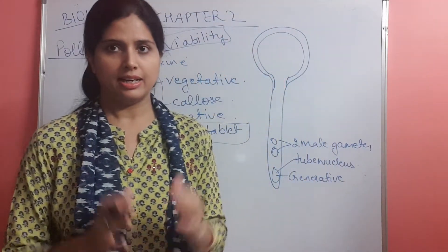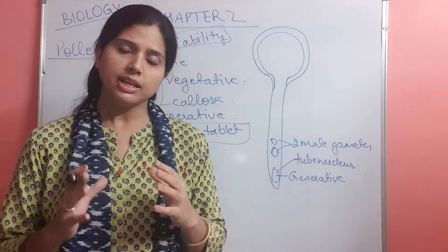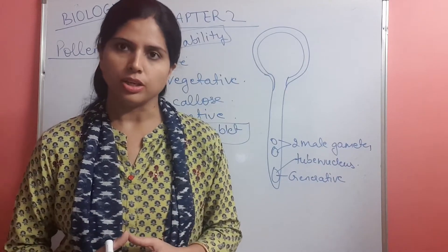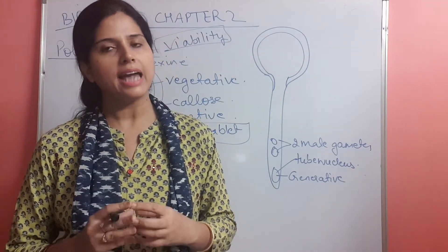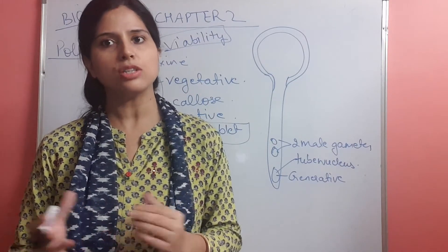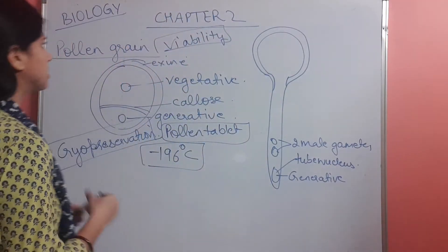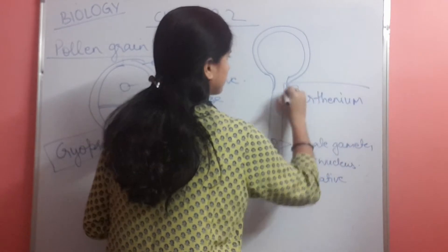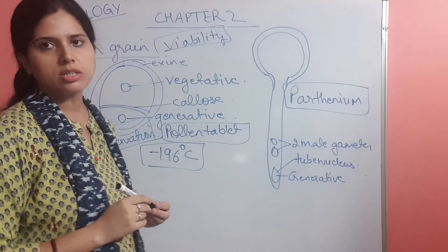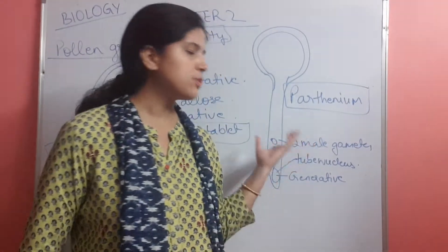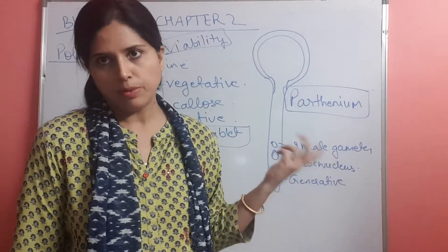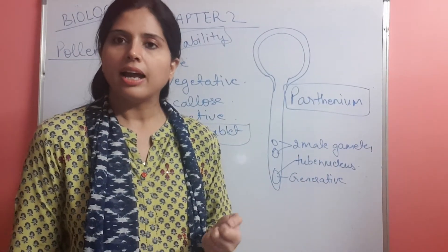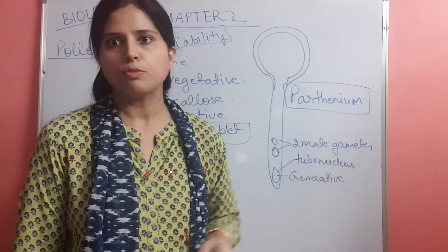One more thing is there: that pollen, when it consists of nutritive value, then in some cases these pollen grains also cause pollen allergy. One very famous is carrot grass, which is also called as carrot grass or congress grass, which is called parthenium, parthenium, which is very famous and which causes pollen allergy. It was imported from foreign, but it caused pollen allergy, and the hay fever is also caused by this pollen allergy only.